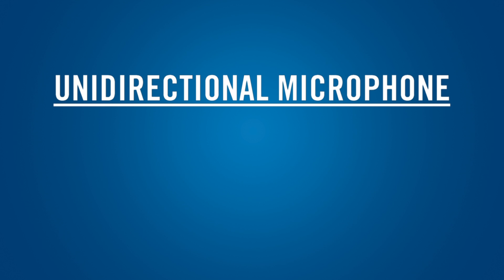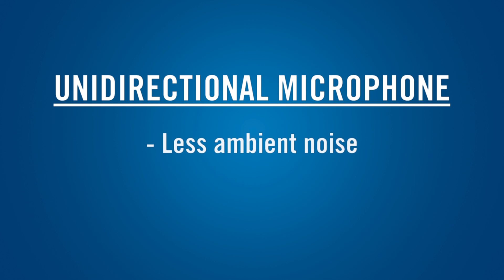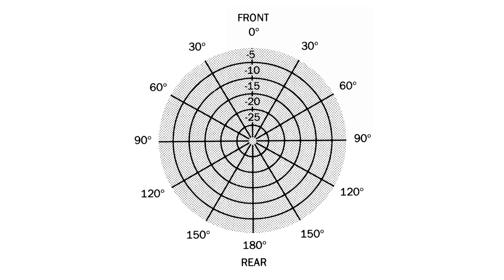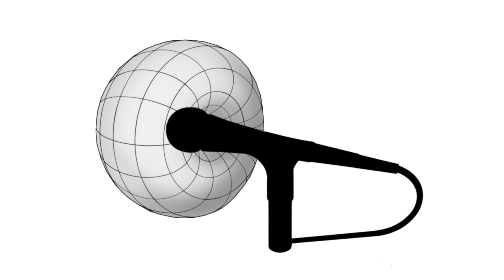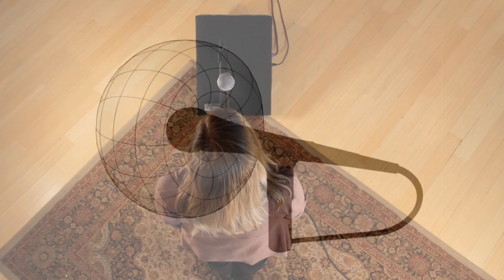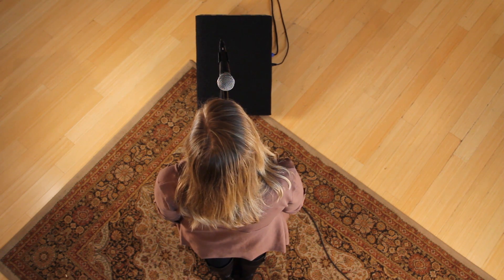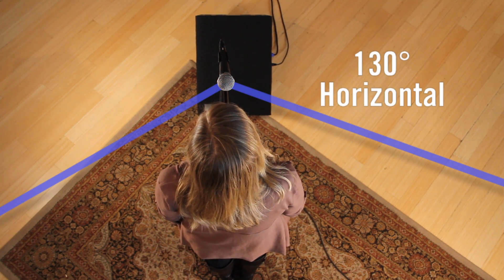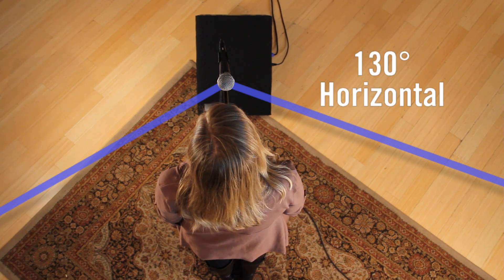A unidirectional microphone is most sensitive to sound coming from one direction. A unidirectional mic picks up less ambient noise than an omnidirectional type and is less susceptible to feedback when used with a sound system. The most common unidirectional pattern is the cardioid, which is so named because it resembles a heart. A cardioid microphone is most sensitive to sound sources in front of the mic and least sensitive to sound sources directly behind the mic. A cardioid mic has a useful pickup angle of approximately 130 degrees, which can accommodate two talkers or singers or one user who may not always be directly in front of the mic.